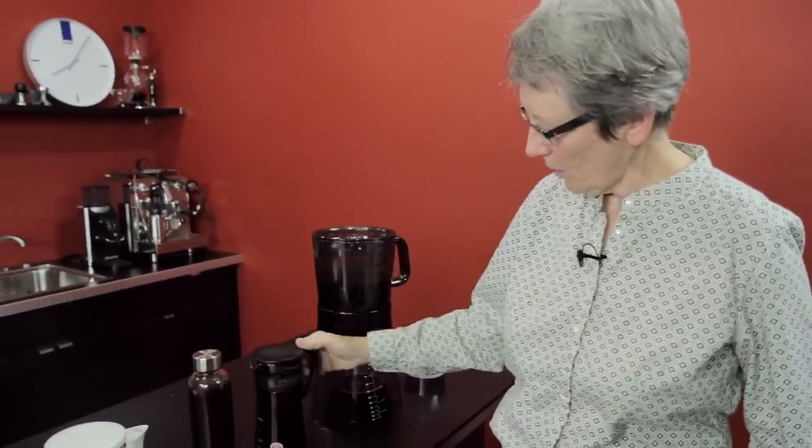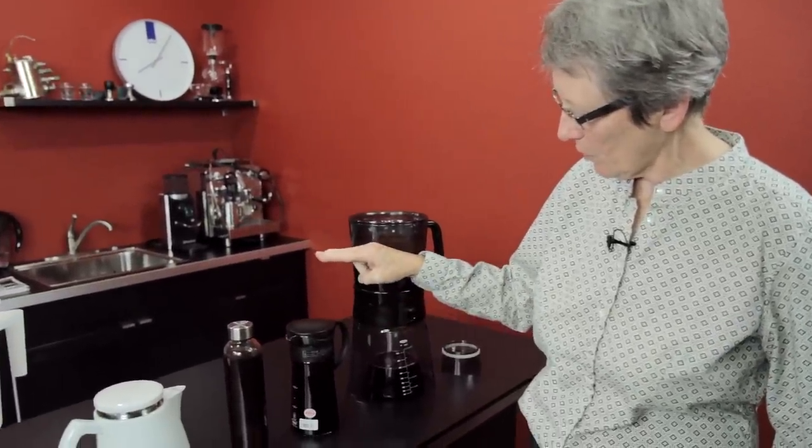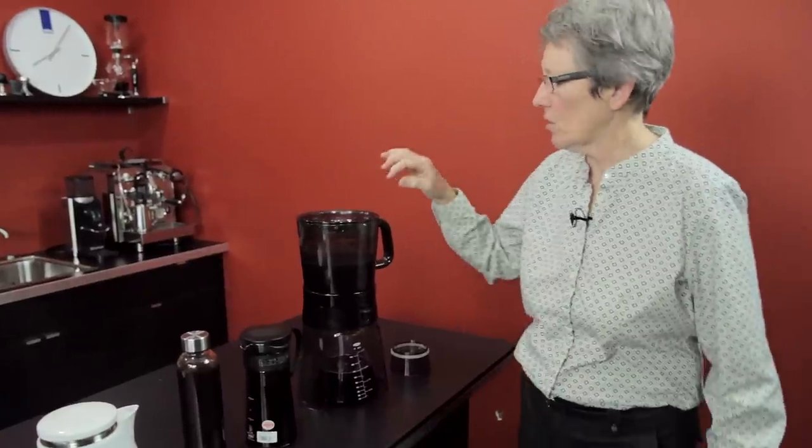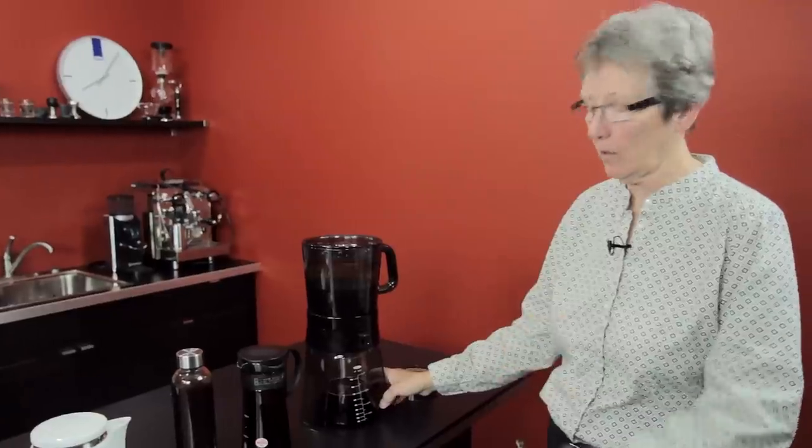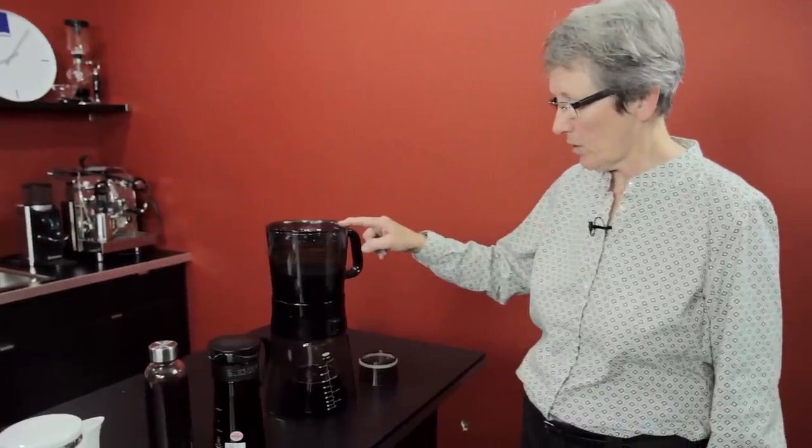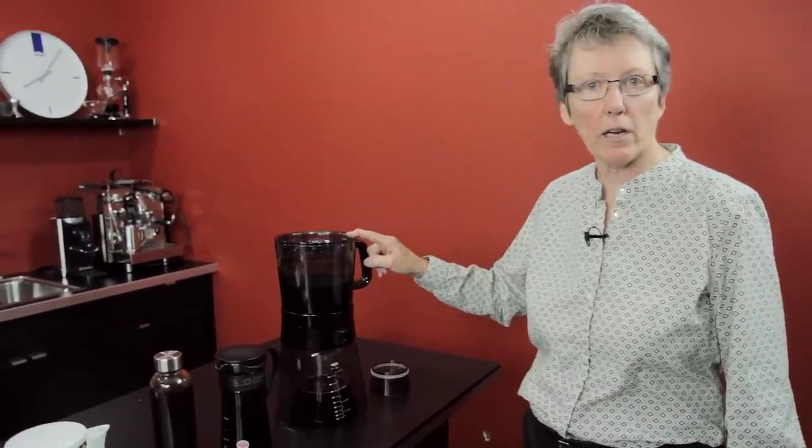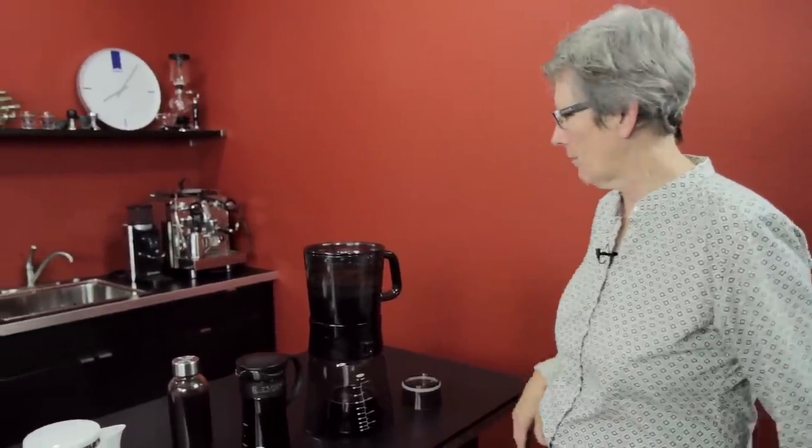So this is the Hario cold brew. This comes in two different sizes. This is the smaller one, the larger one's a little bit bigger. And then this is a new one. You won't find it on our webpage when I do the airing of this, but it's going to be up there shortly. This is by OXO and they make a lot of different kitchen gadgets, all kinds of stuff to do with the kitchen.